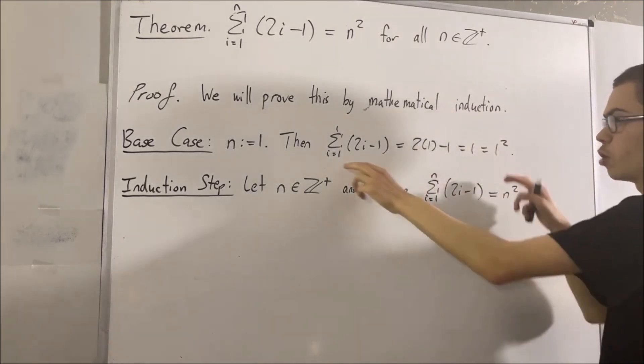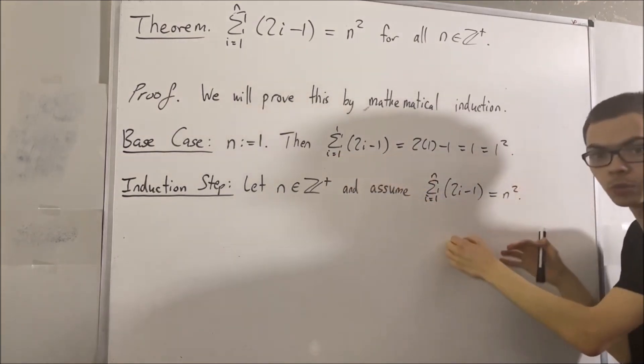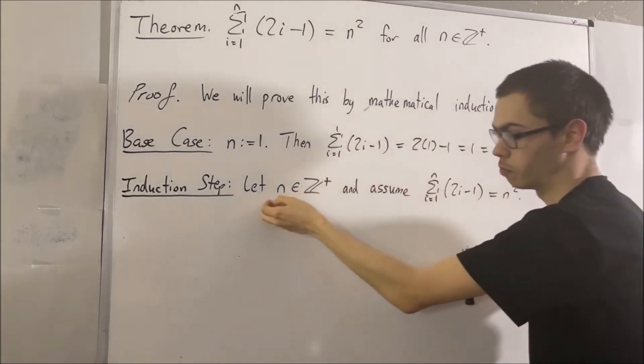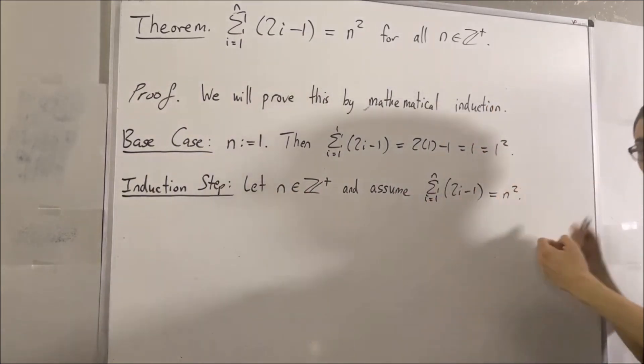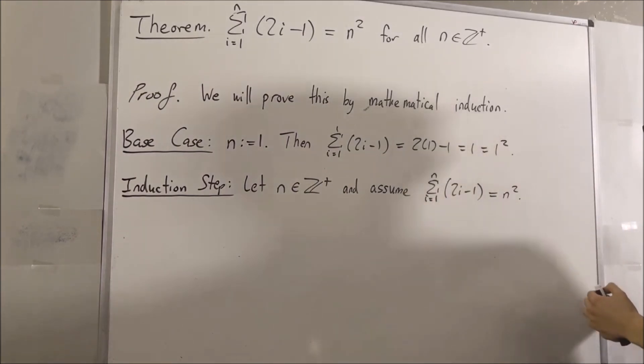Because since we know it's true for n equals 1, it will then be true for n equals 2. But since n could be any positive integer, then it'll be true for n equals 3. Then it'll be true for n equals 4. And so on. Right? And that's the idea behind induction.